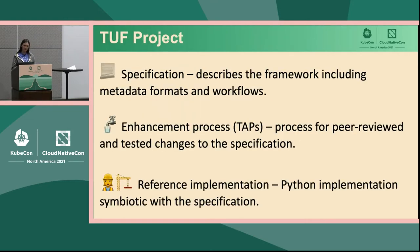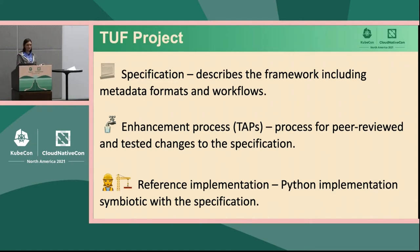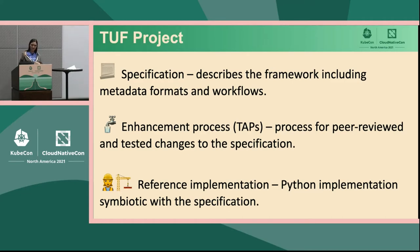The TUF project has a bunch of different pieces — it's not just one thing. The TUF specification is one of the big things we do, and it describes the framework including all those things I talked about, with more specific metadata formats and workflows that explain how these things work in practice. TUF also includes TUF Augmentation Proposals, or TAPs, which are a process for proposing bigger changes to the specification or new features we want to add. And finally, we have a reference implementation of TUF written in Python, which shows how the specification can be used in practice. We always aim to have the reference implementation in line with the current version of the specification.